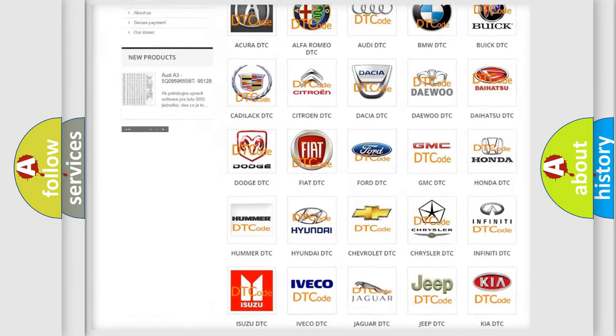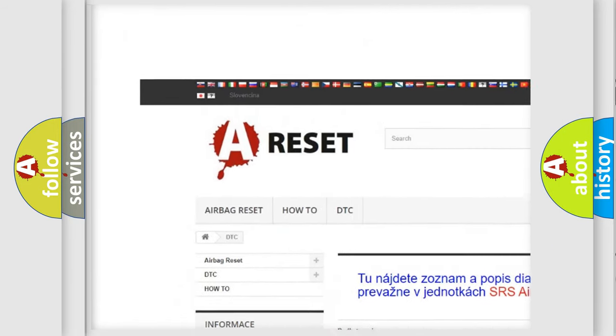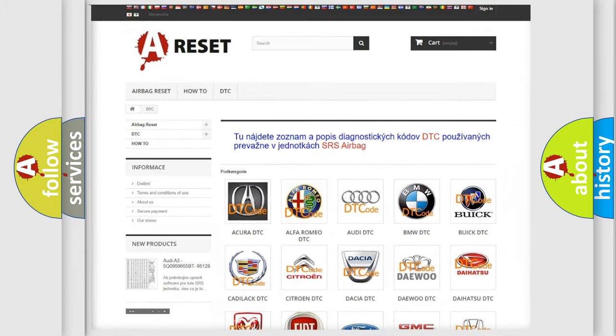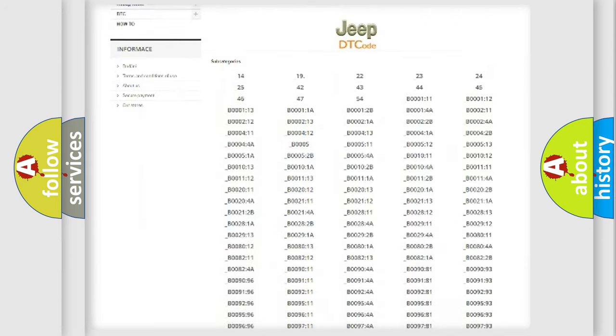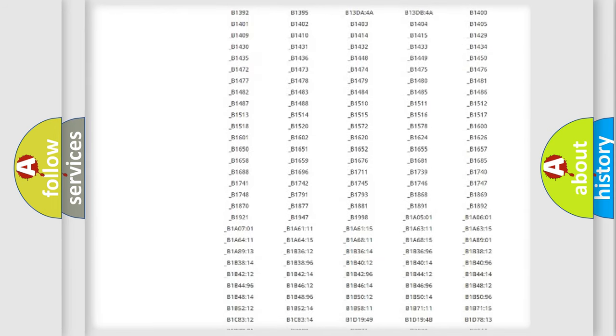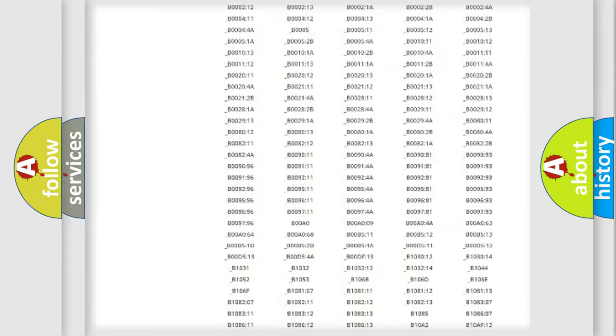Our website airbagreset.sk produces useful videos for you. You do not have to go through the OBD2 protocol anymore to know how to troubleshoot any car breakdown. You will find all the diagnostic codes that can be diagnosed in Jeep vehicles.